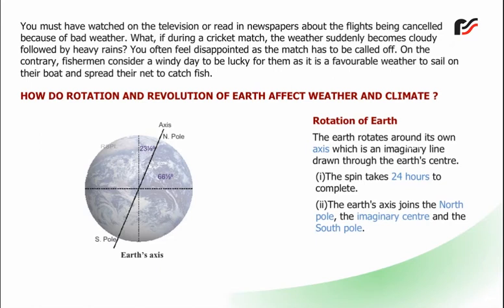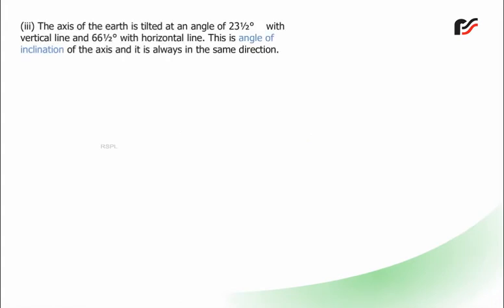The Earth's axis joins the North Pole, the imaginary centre, and the South Pole. The axis of the Earth is tilted at an angle of 23½ degrees with the vertical line and 66½ degrees with the horizontal line. This is the angle of inclination of the axis, and it is always in the same direction.